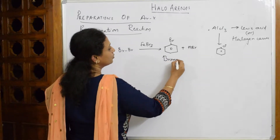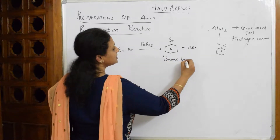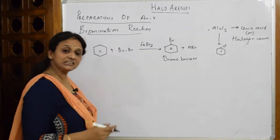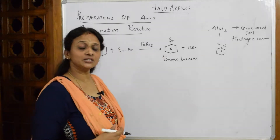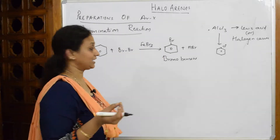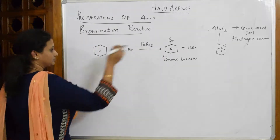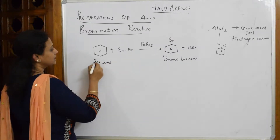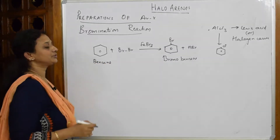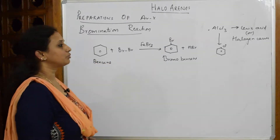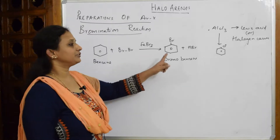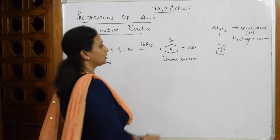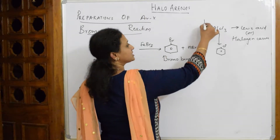So when FeBr₃ acts as a Lewis acid, the product I get is bromobenzene, plus HBr coming out. Earlier with AlCl₃ and Cl₂ I got chlorobenzene — here I'm supplying bromine, so I get bromobenzene and HBr. You have already seen in the previous reaction how HBr is formed.